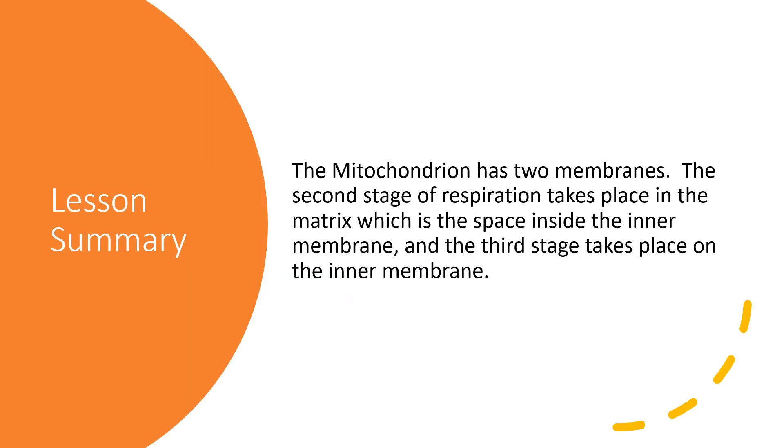In summary, the mitochondrion has two membranes. The second stage of respiration takes place in the matrix, which is the space inside the inner membrane, and the third stage of respiration takes place on the inner membrane.